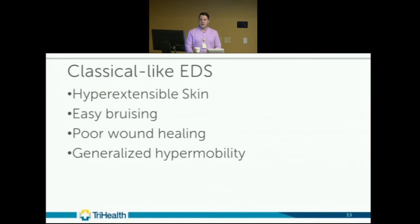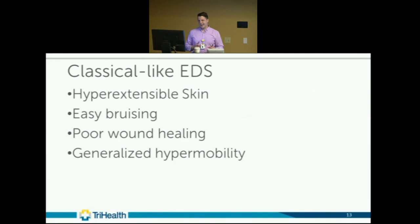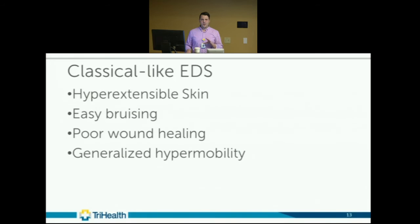Classical-like EDS has very similar signs to classical — hyperextensible skin over two centimeters, easy bruising, poor wound healing, generalized hypermobility, and soft velvety skin. The key difference from classical EDS is the absence of significant scarring — no paper-thin or atrophic scarring.